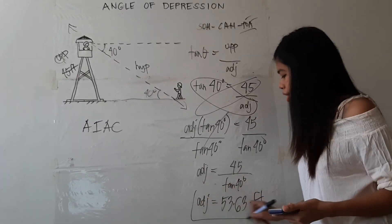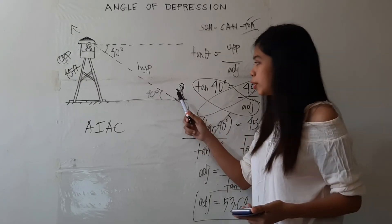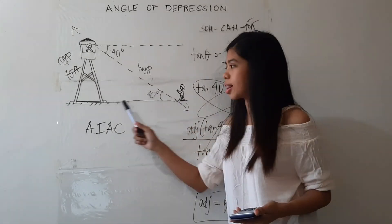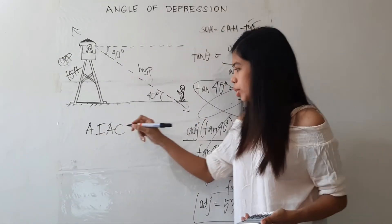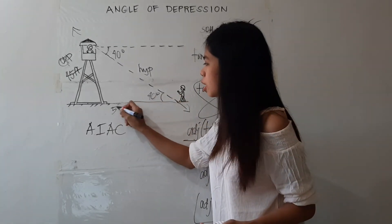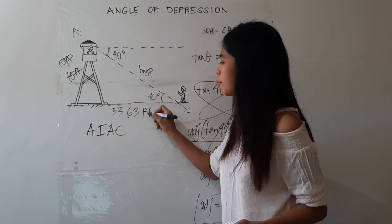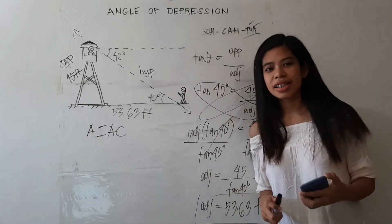So this is now the distance between the forest ranger's partner and the base of the tower. 53.63 feet. That's it.